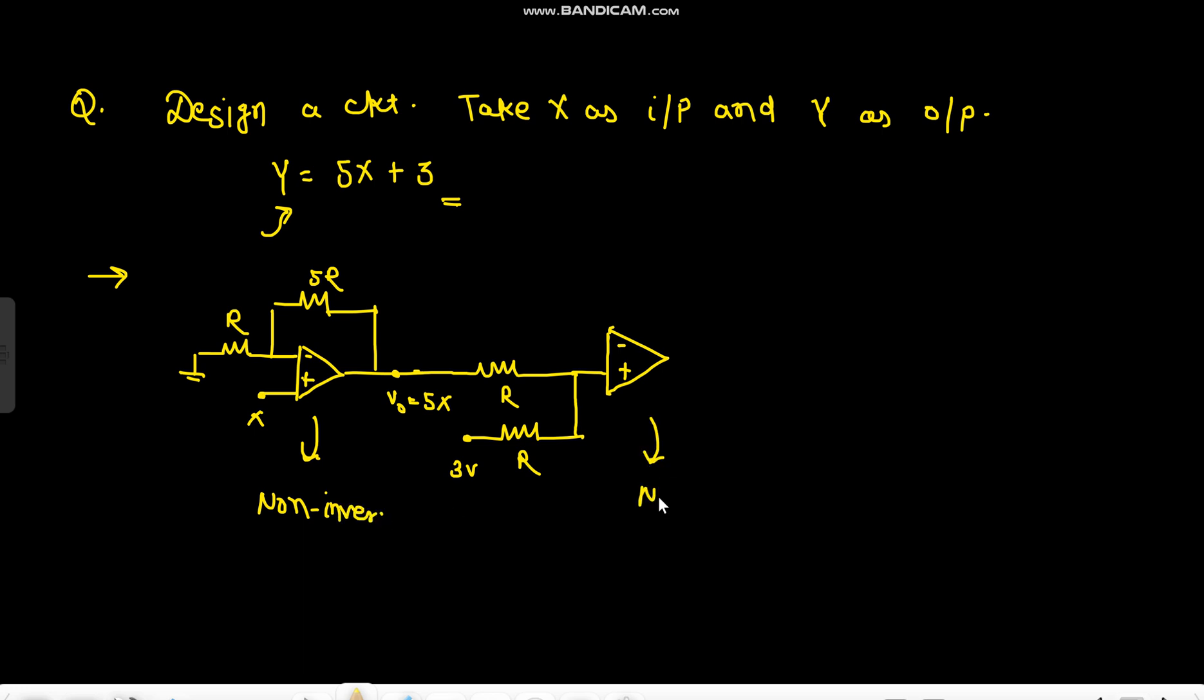Here again I am using a non-inverting amplifier. This shouldn't be 5R, it should be 4R, because for non-inverting amplifier what is the gain? 1 plus R2 by R1. So this would be my gain. But here what happens is for my 5X I would apply superposition. First I will short 3 volts.